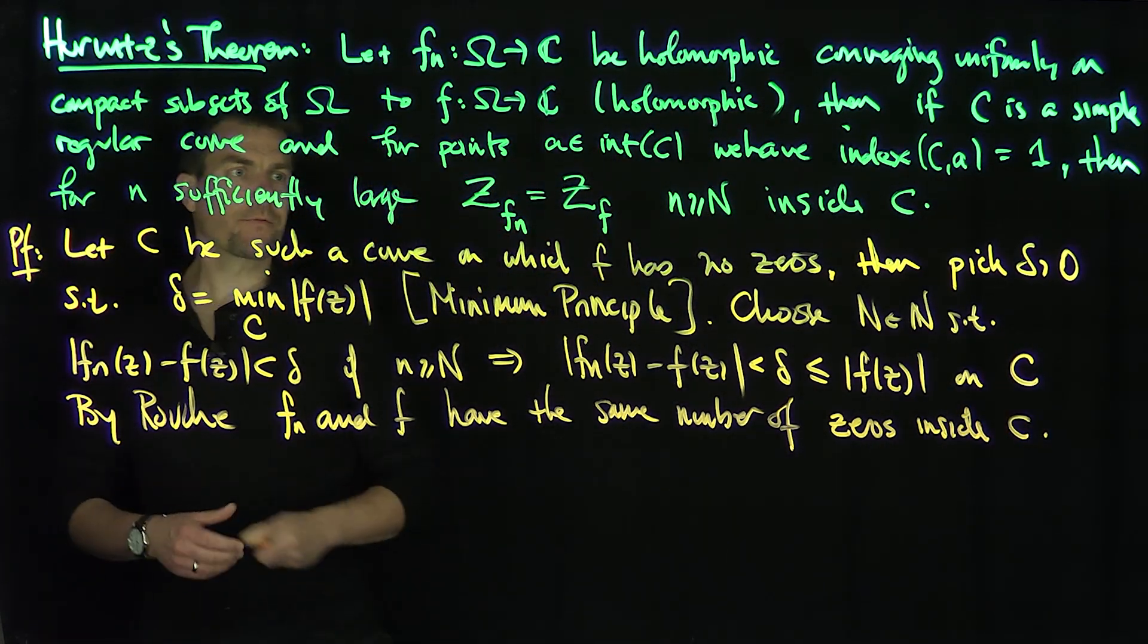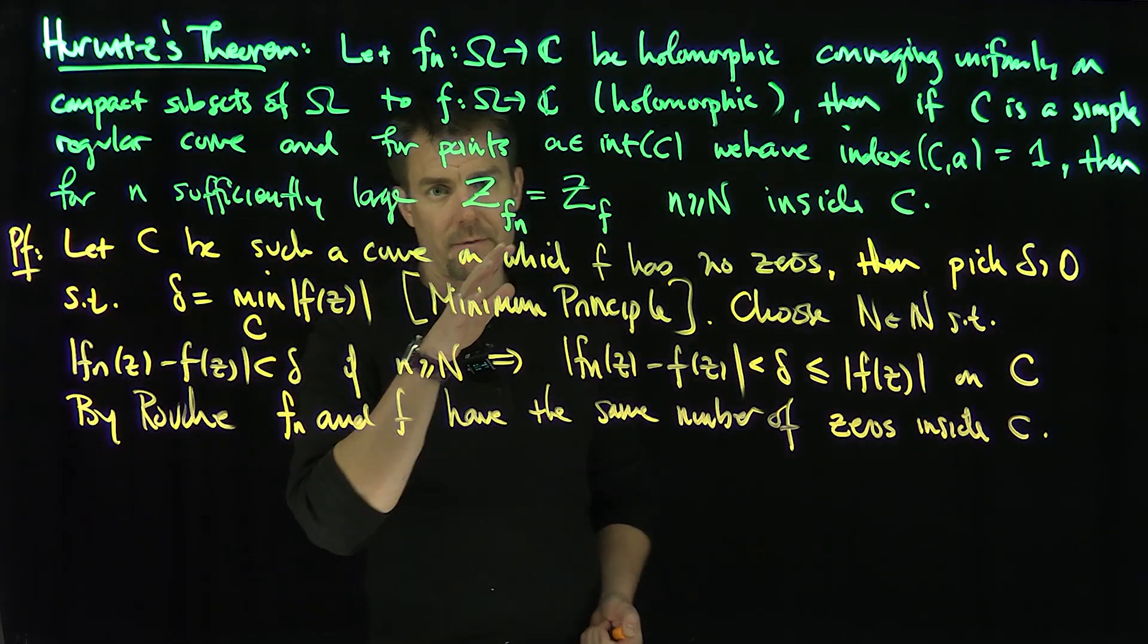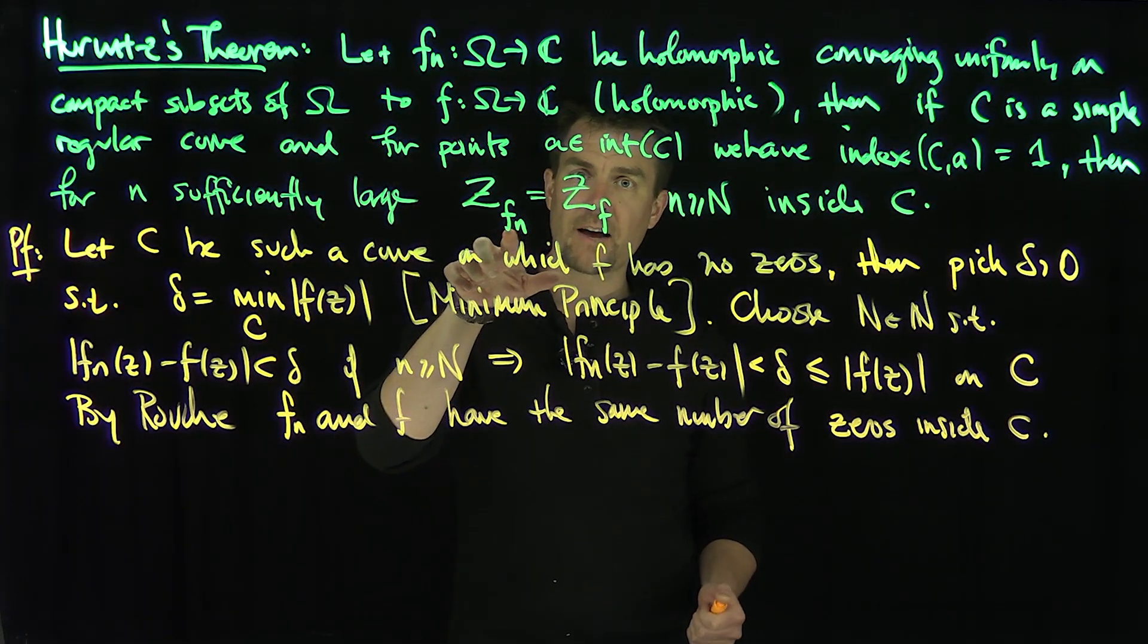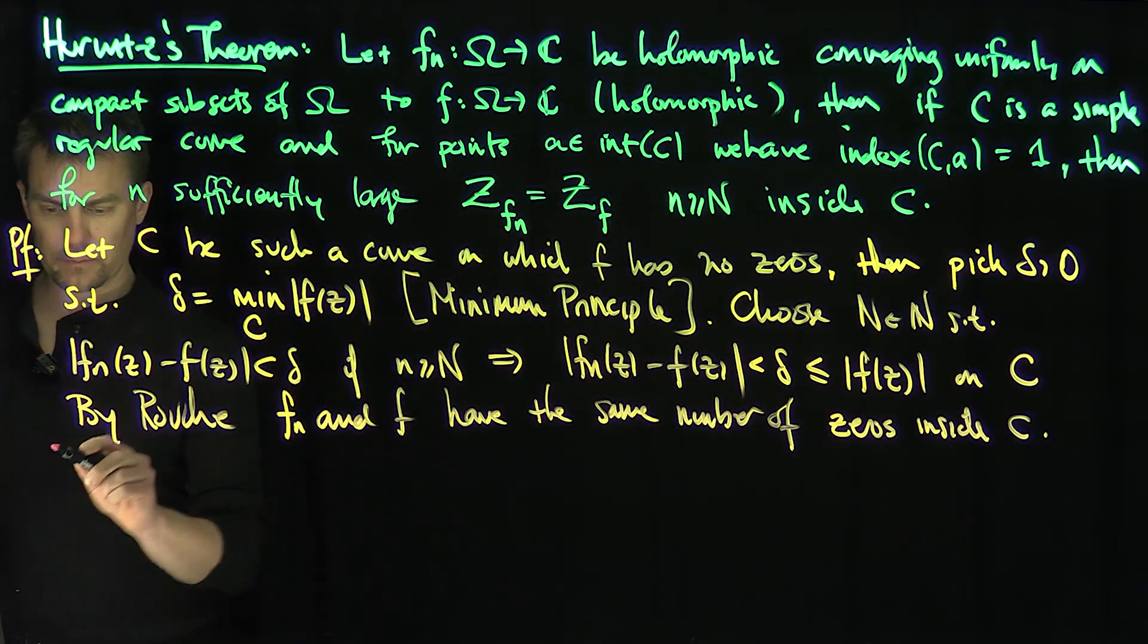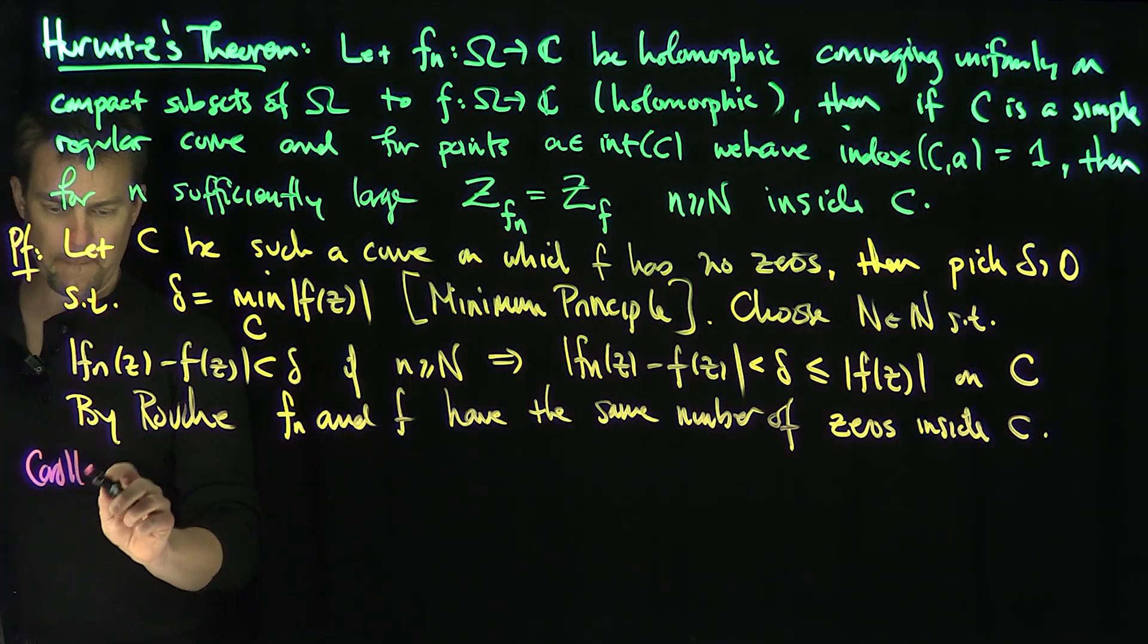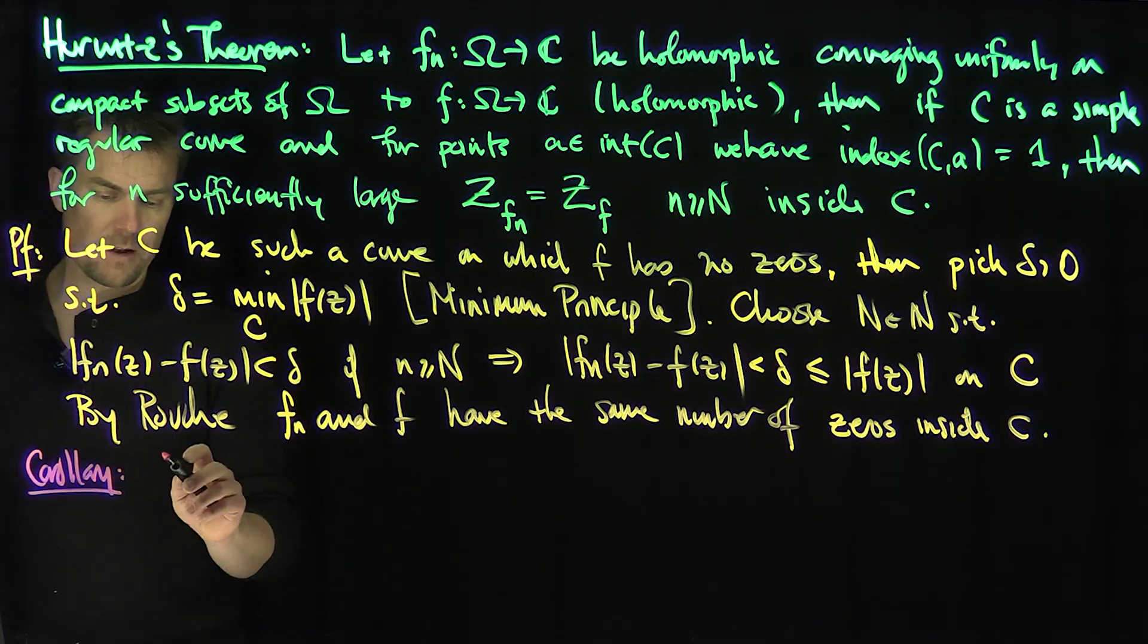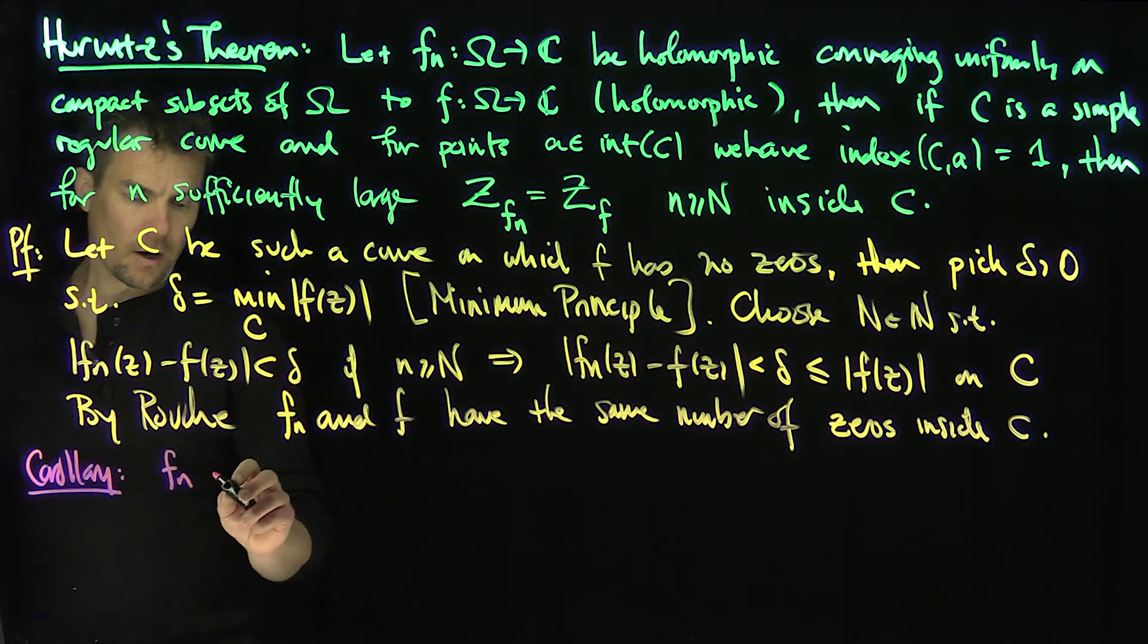All right, and so of course you can reframe this in terms of when the function f is zero. So in other words, if I give you a sequence of holomorphic functions fn, I can rephrase this as a corollary. A corollary would be that if fn are holomorphic functions